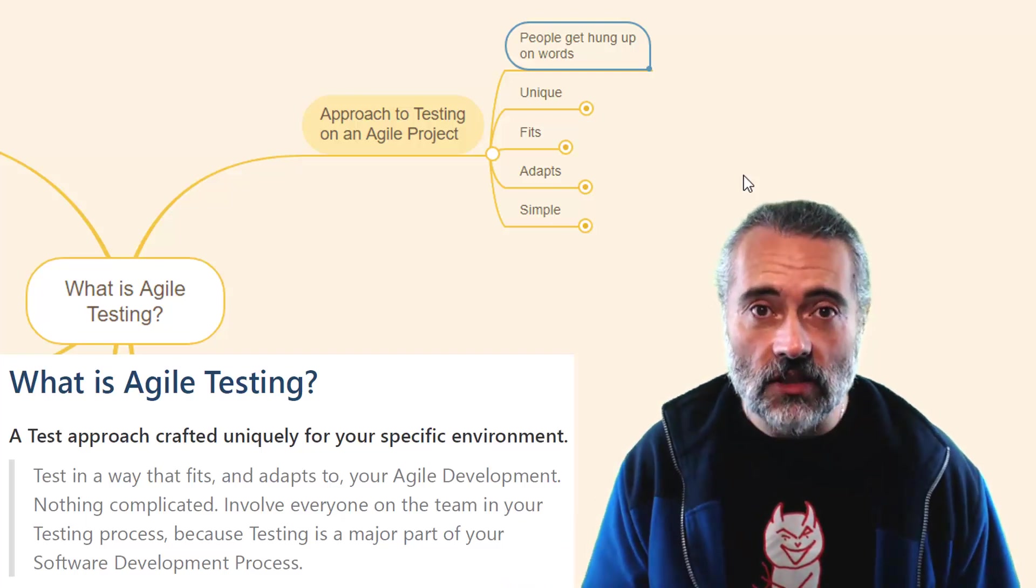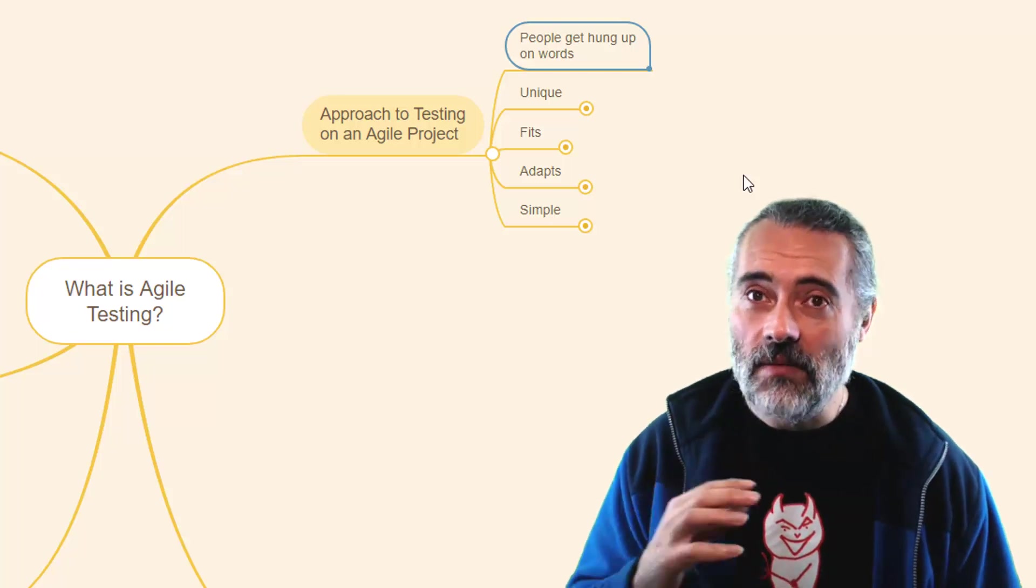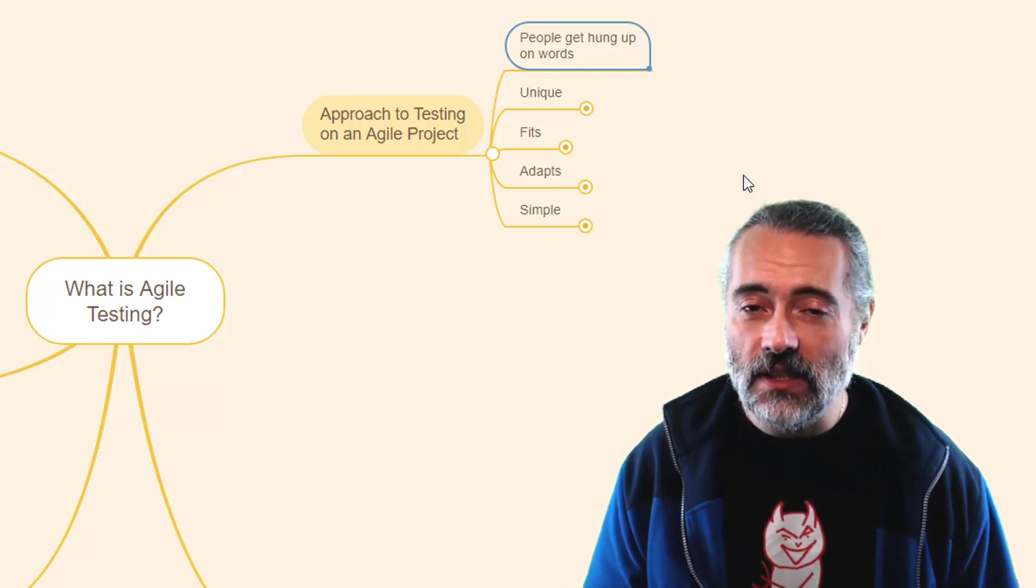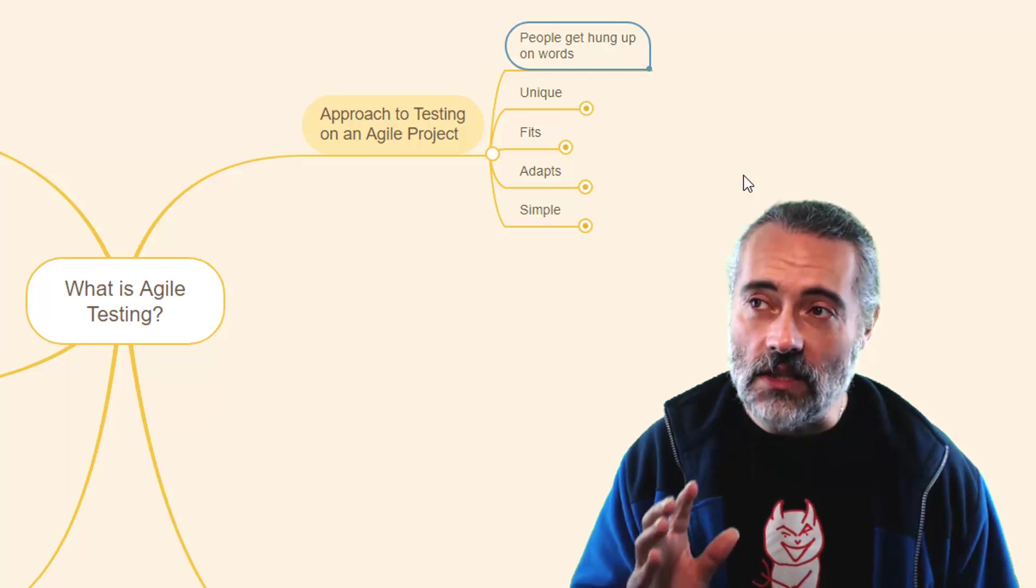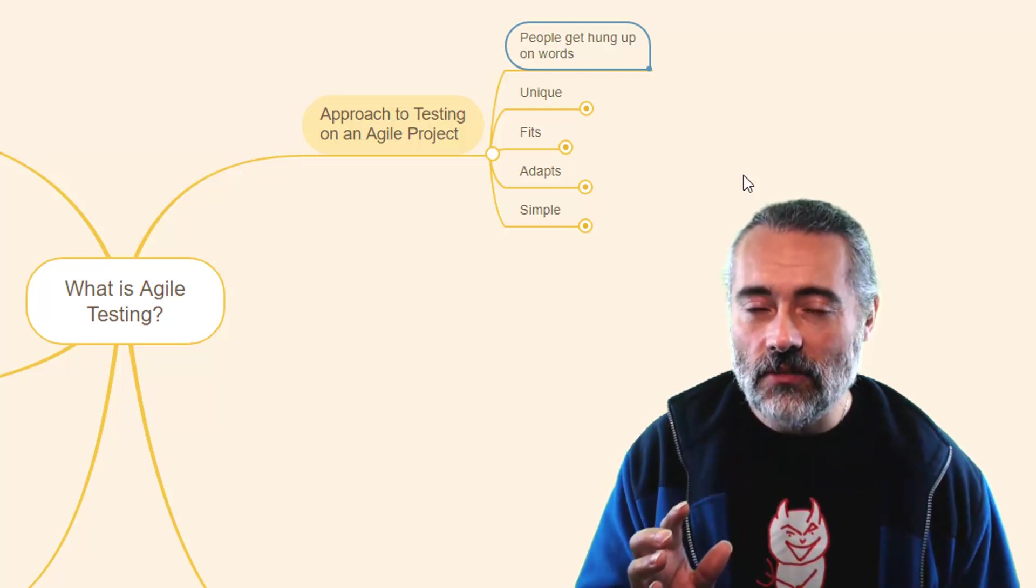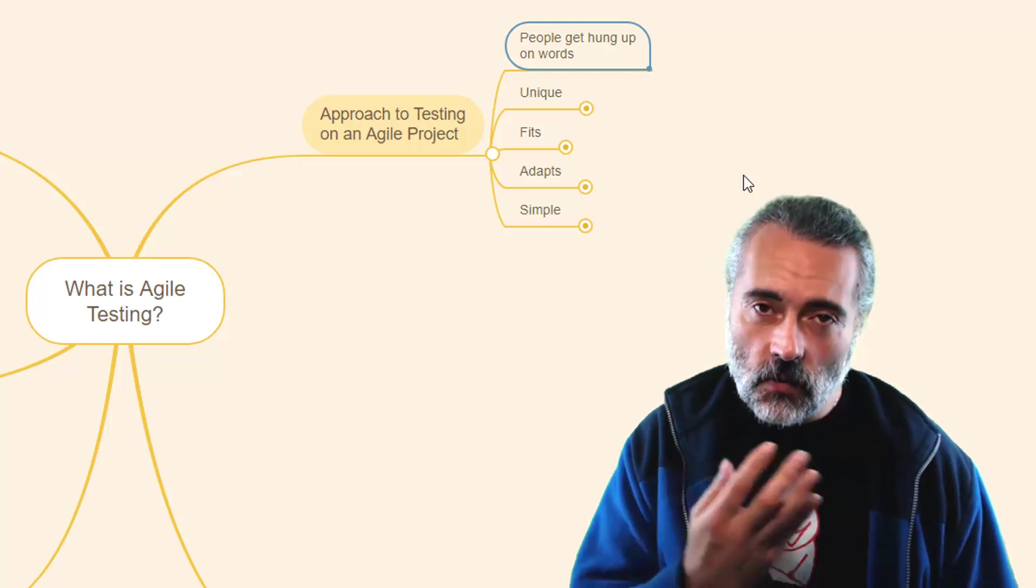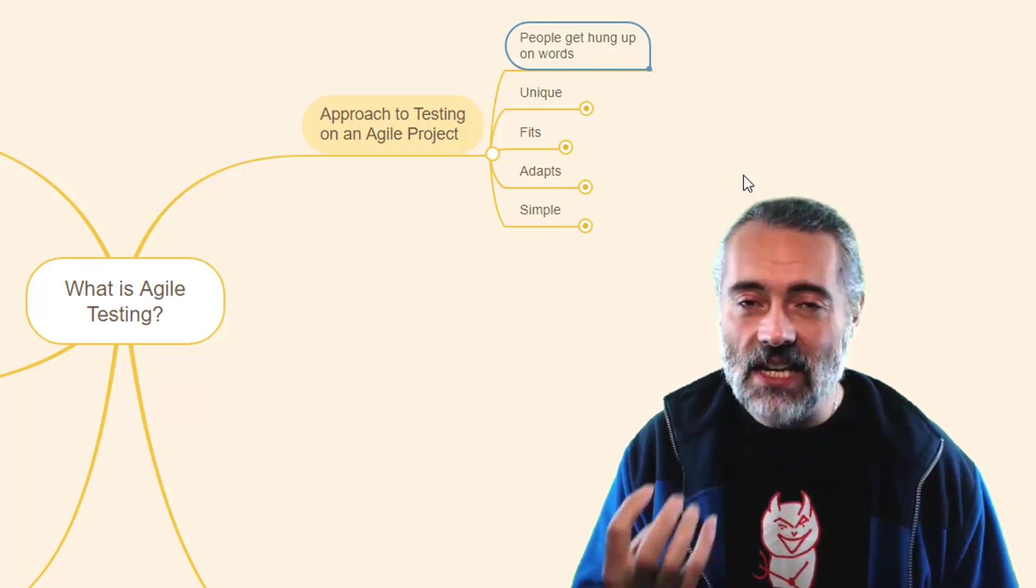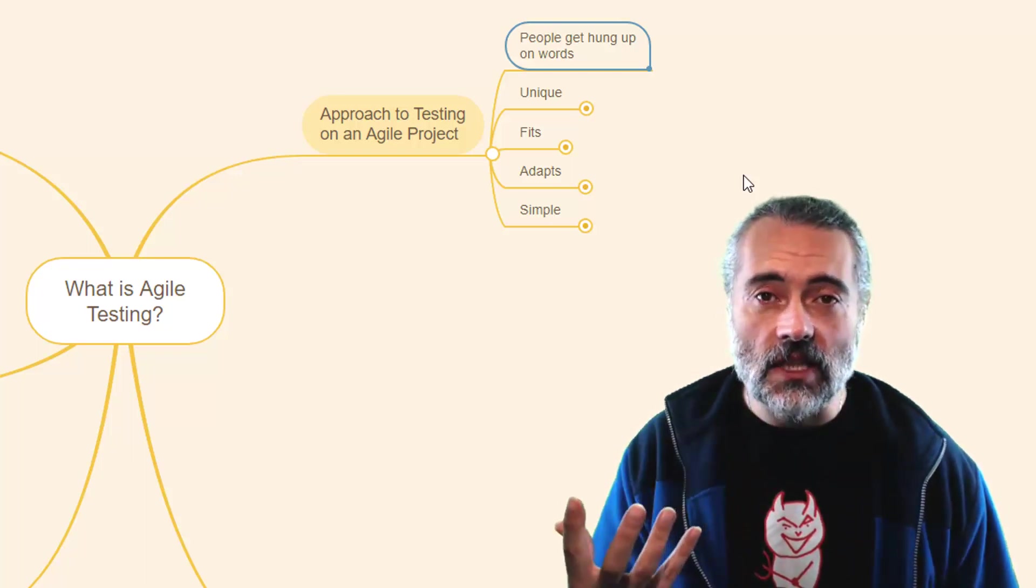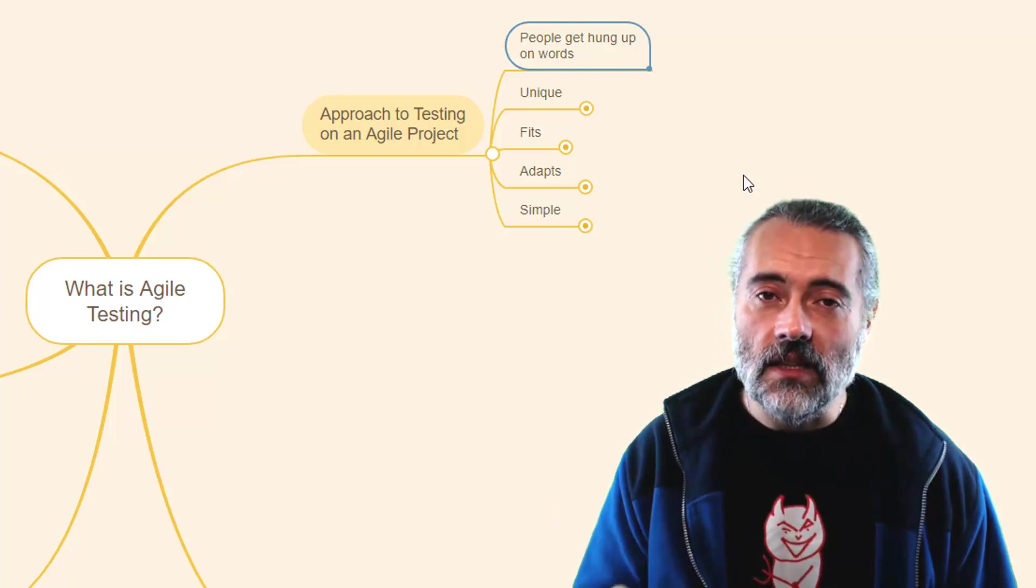That's the only thing that makes it different from any other test approach. The fact that we are testing on an Agile project. Now it seems kind of tautological. That seems obvious, but for some reason, people make it hard and it's not a new thing, as we're going to find out because people get hung up on the words and they get hung up on the words because they don't really understand what the words meant before. They didn't really understand what testing meant before. So Agile testing seems like it's a new thing.